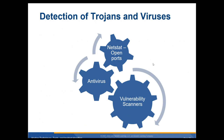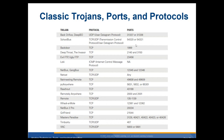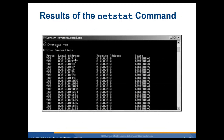Detection of Trojans and viruses: use netstat to check open ports, your antivirus may find them, and vulnerability scanners can also help. Using the netstat command with the -an flag shows active network connections and foreign addresses, including the ports running. If certain known Trojan ports show up, that's a sign of an active Trojan on your machine.